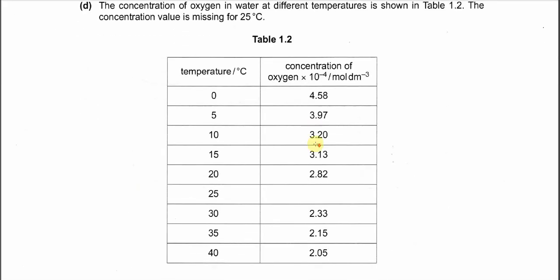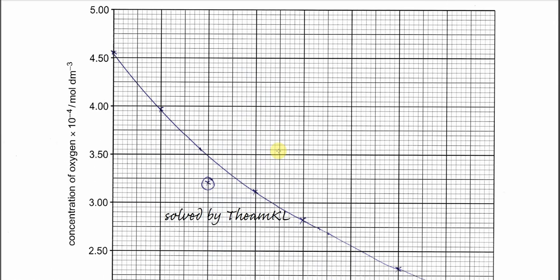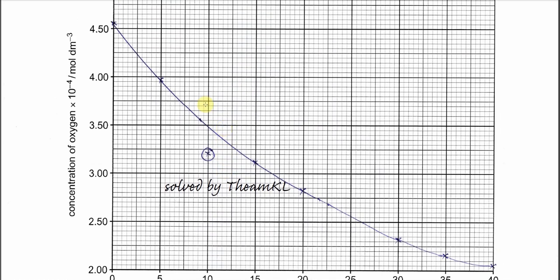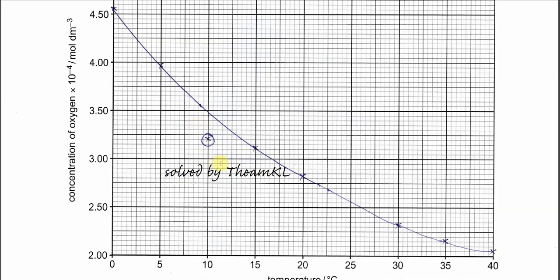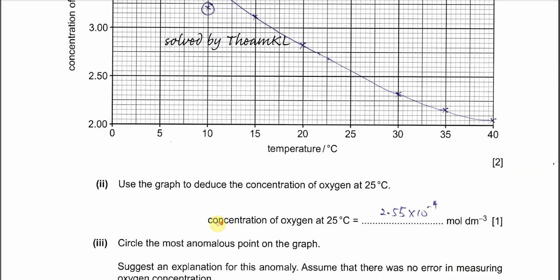Part d: Table 1.2 gives temperature and concentration of dissolved oxygen in mol/dm³. Plot these values on a graph. You should get a curve showing that as temperature increases, the concentration of dissolved oxygen decreases — meaning higher temperature reduces the solubility of oxygen.